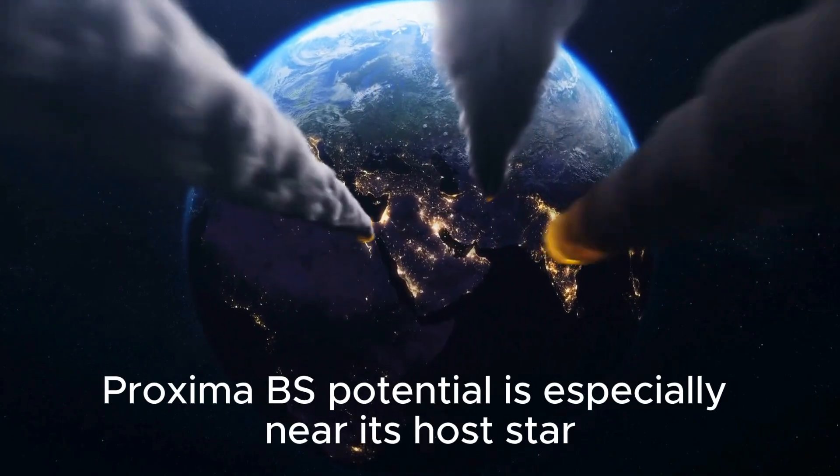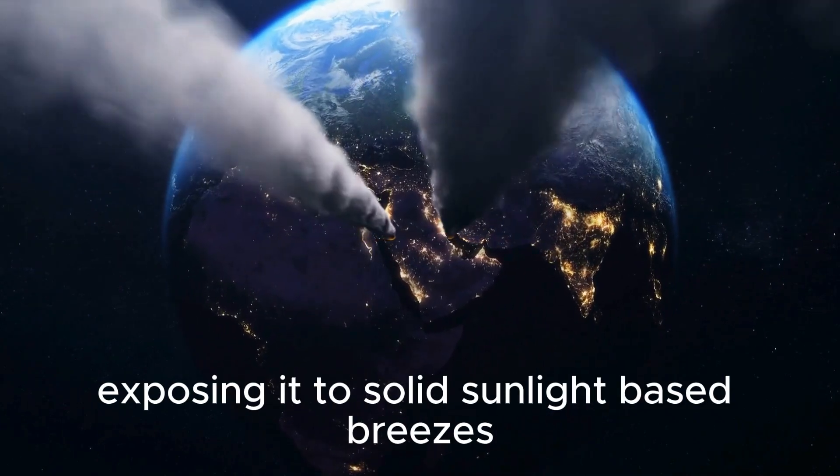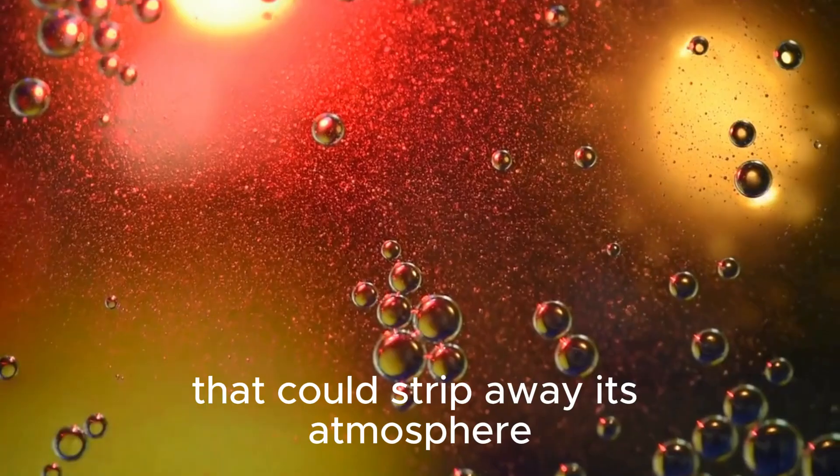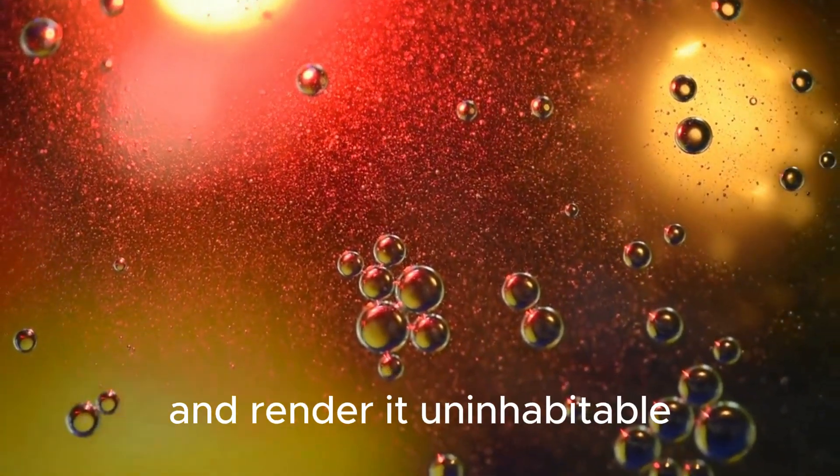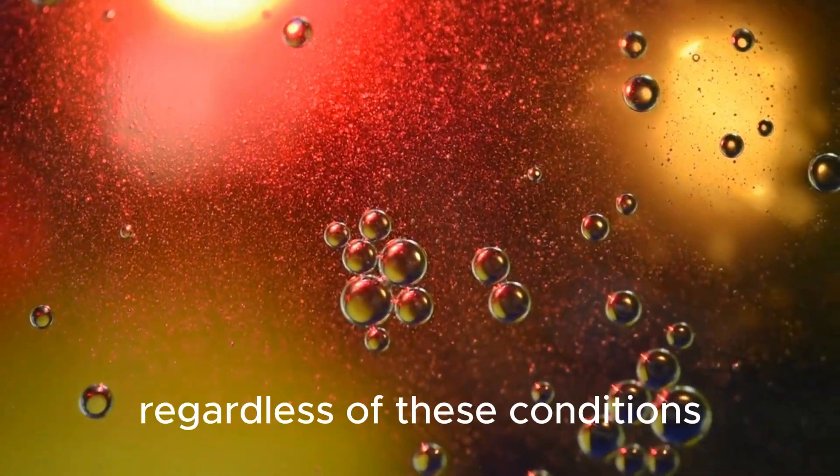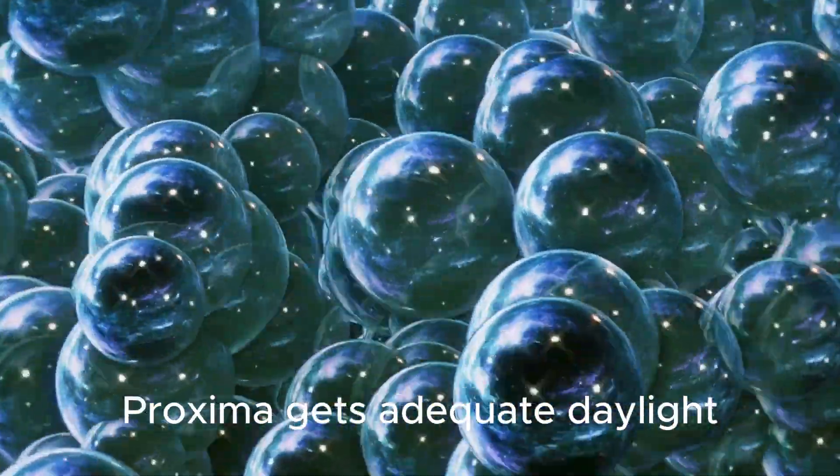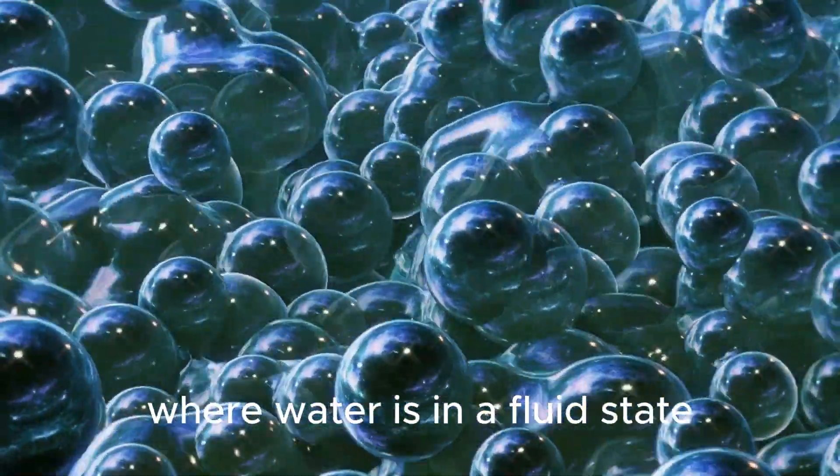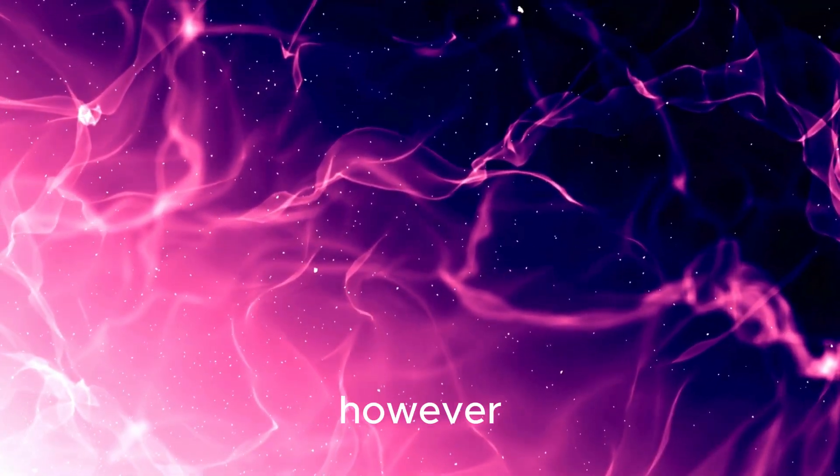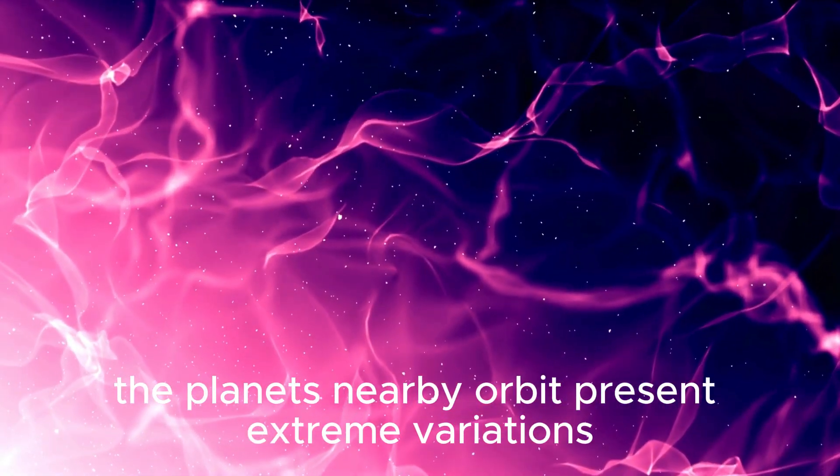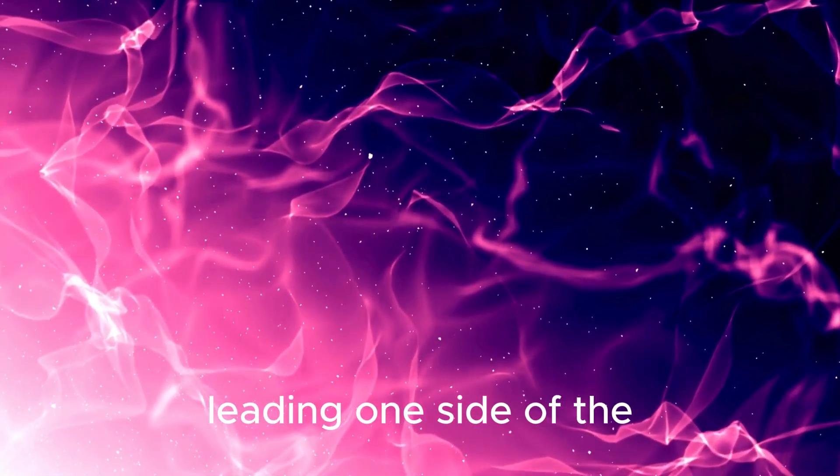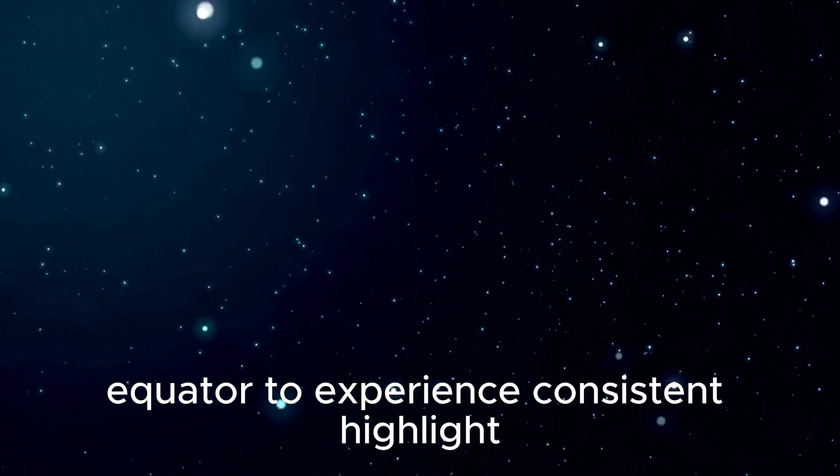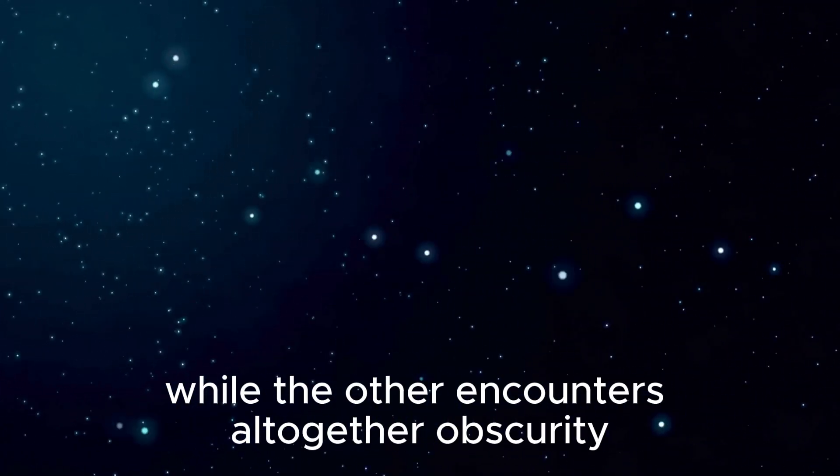Proxima b's potential is especially near its host star, exposing it to solid sunlight-based breezes that could strip away its atmosphere and render it uninhabitable. Regardless of these conditions, Proxima gets adequate daylight to maintain Earth-like temperatures where water is in a fluid state. However, the planet's nearby orbit presents extreme variations, leading one side to experience consistent high light while the other encounters altogether obscurity.